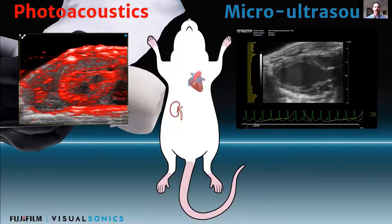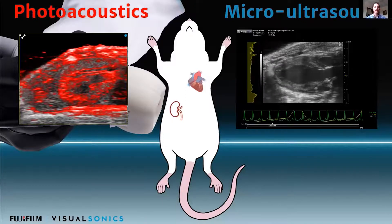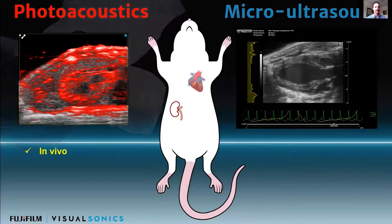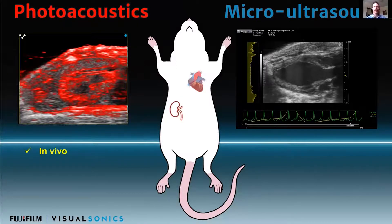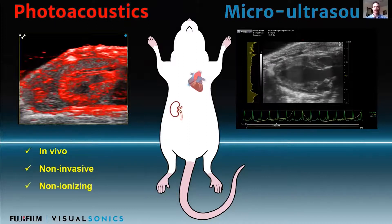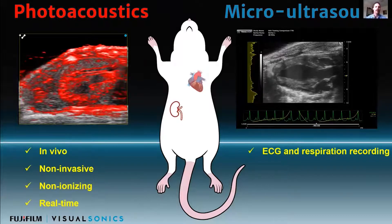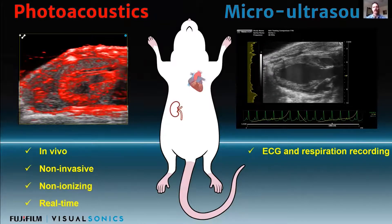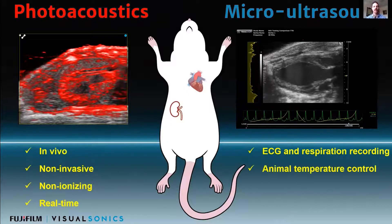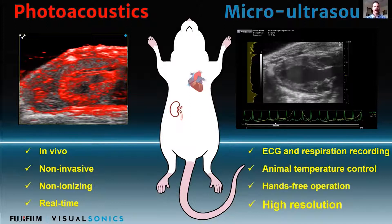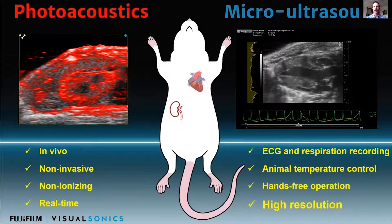What photoacoustics really allows you to do is, on top of structural information, you're actually now seeing optical information at high resolution and at depth. The advantages of both micro-ultrasound and photoacoustics are that they're in vivo, non-invasive, non-ionizing, and a real-time modality. We also allow collection of physiological parameters like ECG and respiration, control the animal's temperature, and offer hands-free operation. The key thing really is high resolution.